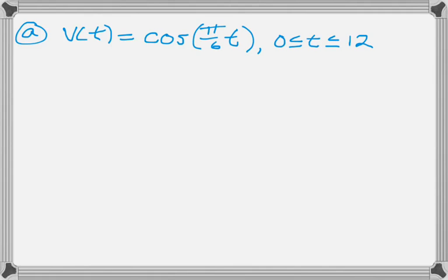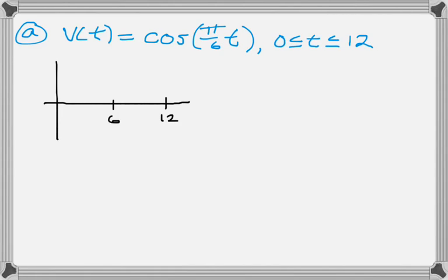The question is: when is the particle moving to the left? We need to know when velocity is negative, so this is really just a trig graphing question. The period of this function is 12, because it's 2π divided by b, and b is π/6. So the period is 12, divide by 2 to get 6, then divide each of those in 2 to get 3 and 9. The range is 1 to negative 1, and it's positive cosine.